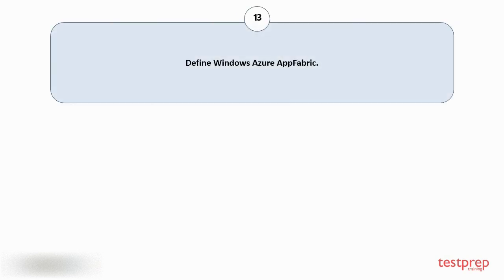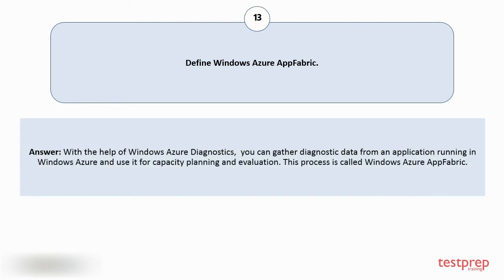Question number thirteen: define Windows Azure App Fabric. Your answer is: with the help of Windows Azure Diagnostics, you can gather diagnostic data from an application running in Windows Azure and use it for capacity planning and evaluation. This process is called Windows Azure App Fabric.